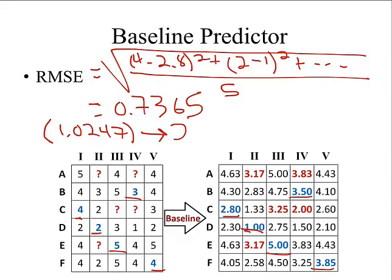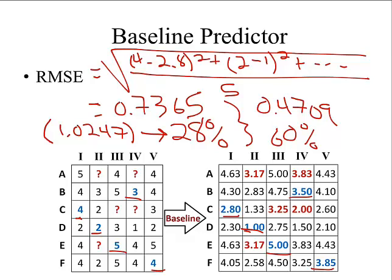In fact, it's an improvement of about 28%. So just by incorporating the simple biases in, we've gotten an improvement of almost 30% on the test data. And on the training data, the RMSE is actually 0.4709, and that's an improvement of actually about 60% over what we saw with the simple average predictor.